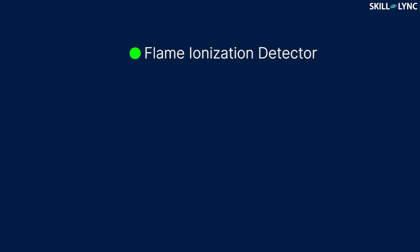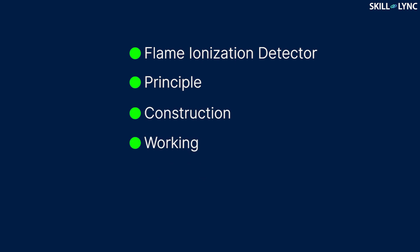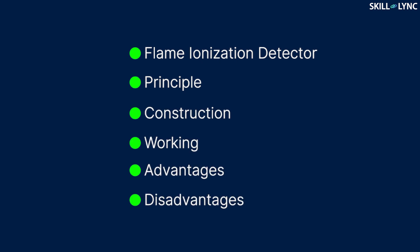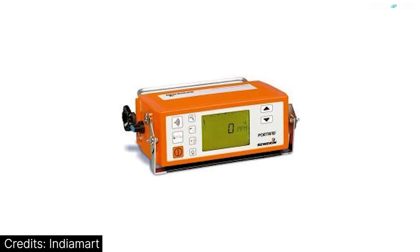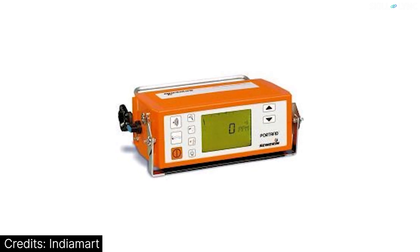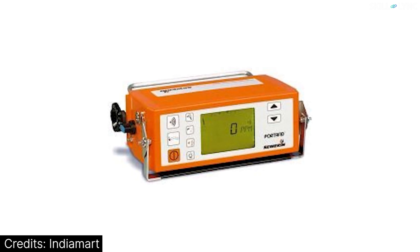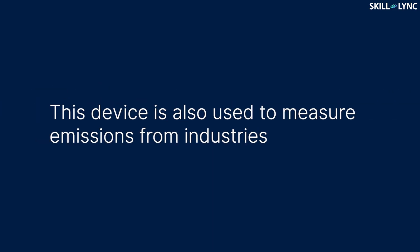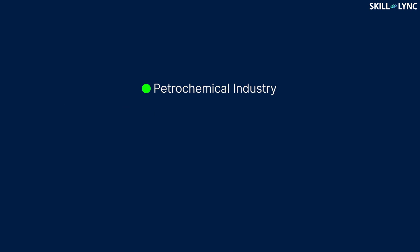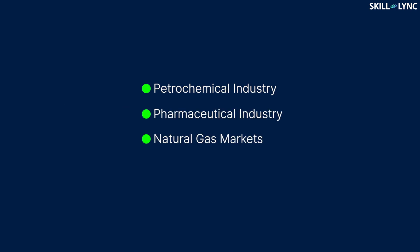We will discuss what a flame ionization detector is, its principle, construction, working with advantages and disadvantages. A flame ionization detector is a device that measures the amount of unburnt hydrocarbons emitted from internal combustion engines. This device is also used to measure emissions from industries like petrochemical, pharmaceutical, and natural gas markets.